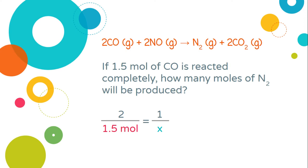On the right, I'm not given any information about this nitrogen that I want. I have therefore used the variable x to represent that I don't know what that is, but I want to find out.